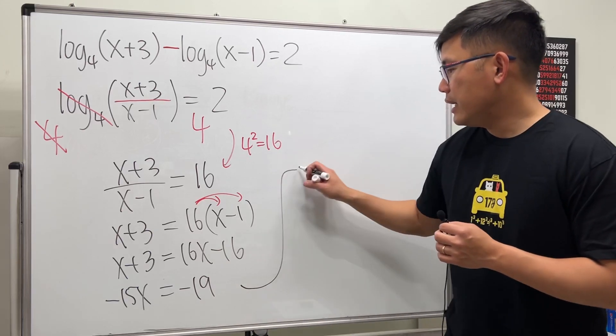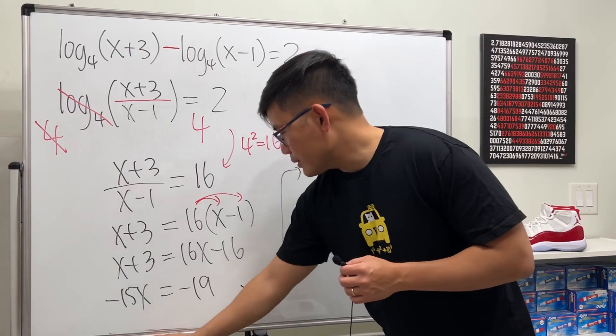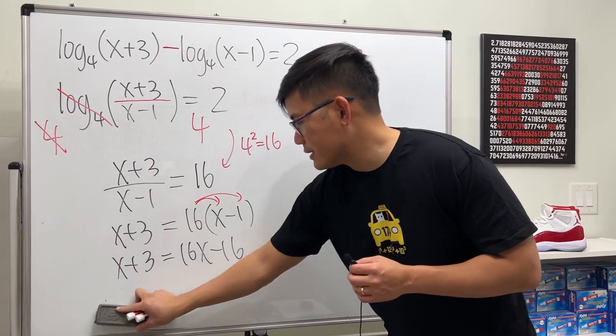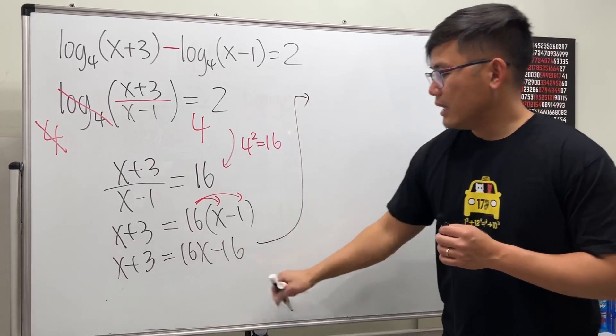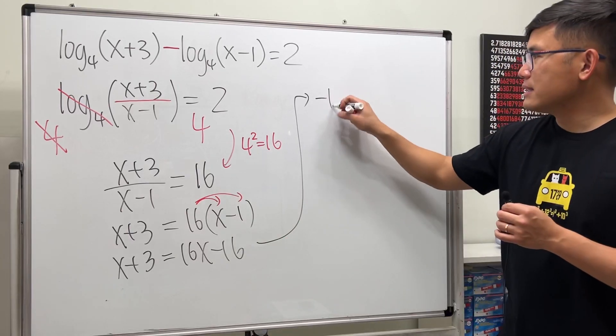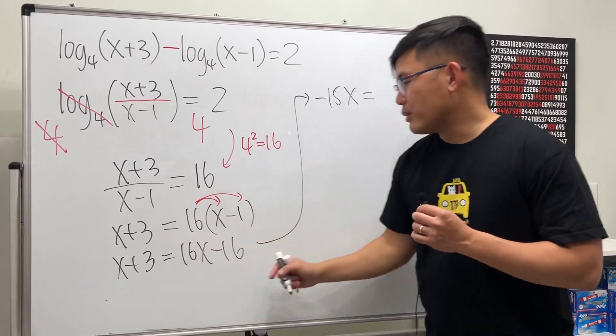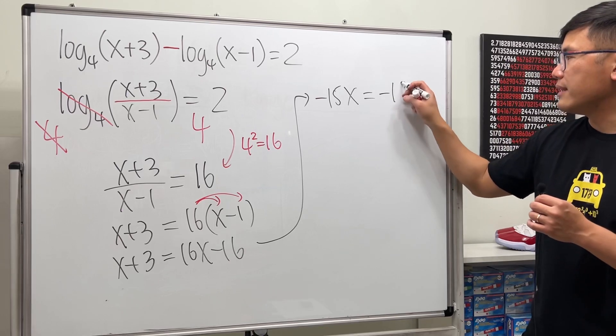Let me write it here so I have more space. Minus 16 on both sides, so we have -15x on the left-hand side. Minus 3 on both sides, this equals -19.